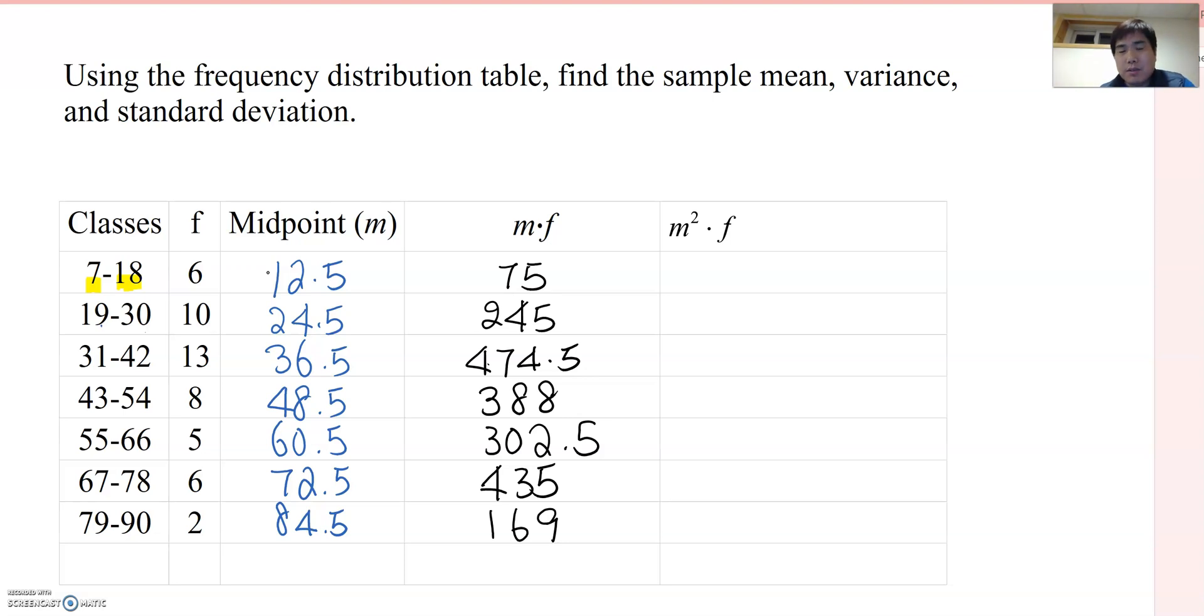Right? The same meaning here. So because we don't know actual data, so we're using midpoint value and then just represent each data set. Therefore, midpoint looks like each data set. Then now, this table looks like weighted mean distribution.